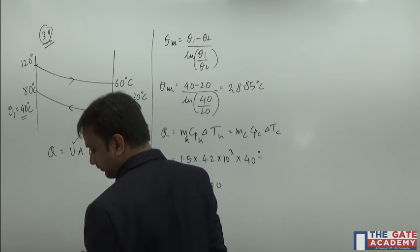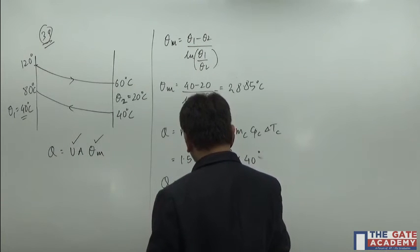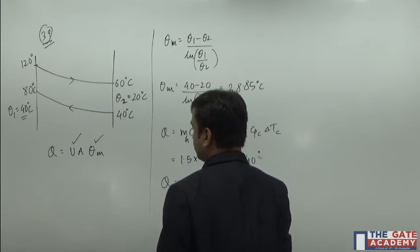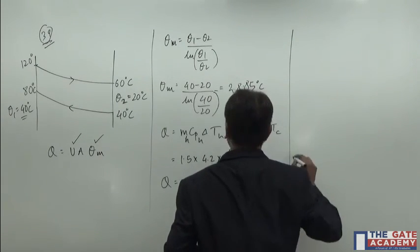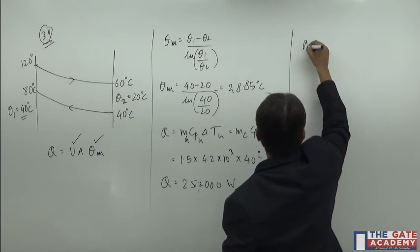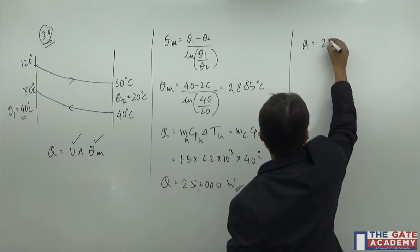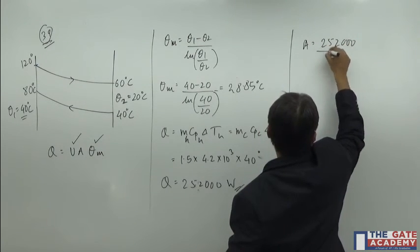252000, and now we can easily calculate the surface area. I don't have to do anything now. A is equal to 252000 divided by u.